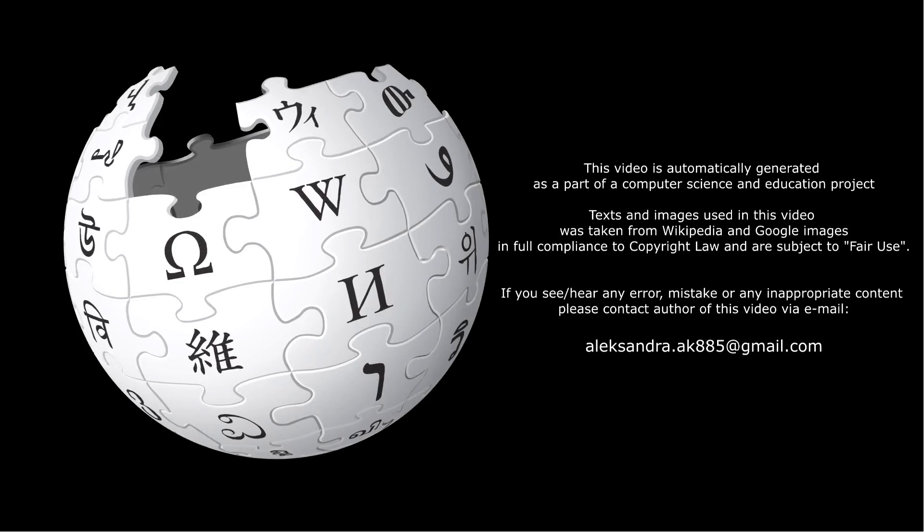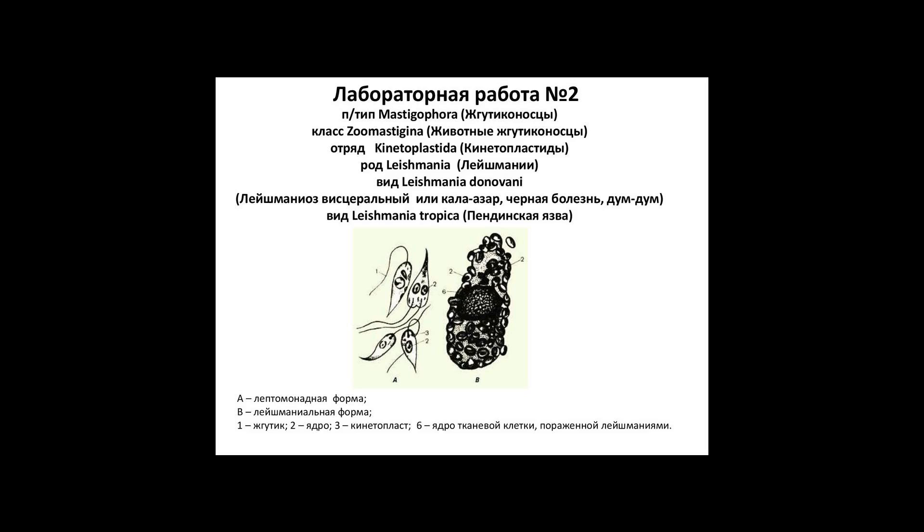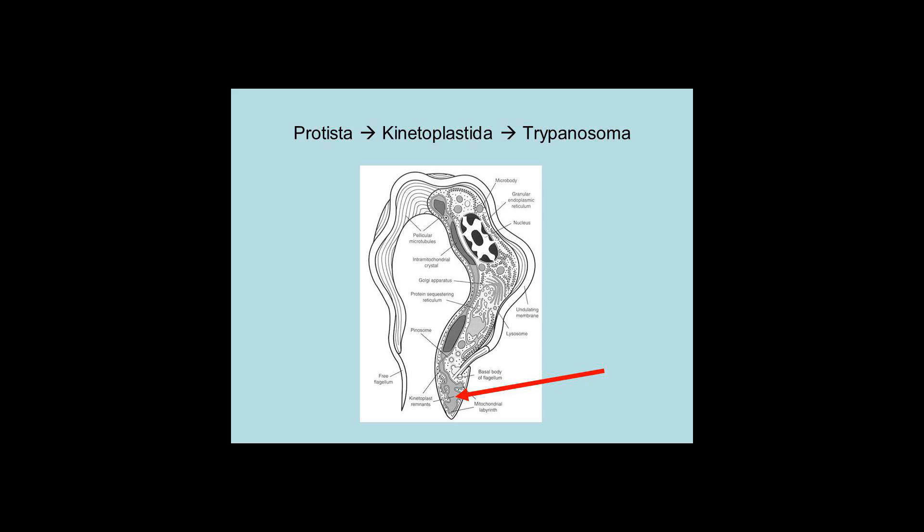Hence the name. The organisms are commonly referred to as kinetoplastids or kinetoplasts. The group includes a number of parasites responsible for serious diseases in humans and other animals, as well as various forms found in soil and aquatic environments.